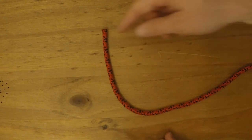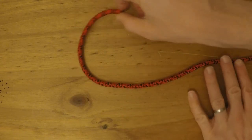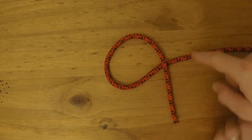To make a figure eight knot, we're going to take the working end of the rope and make a loop over the standing end of the rope.